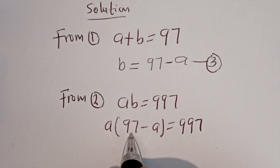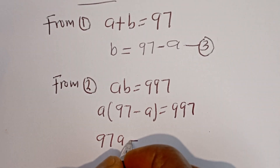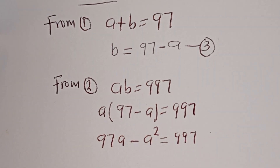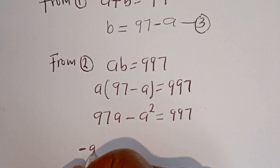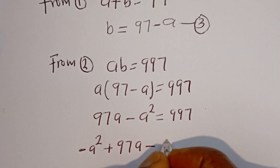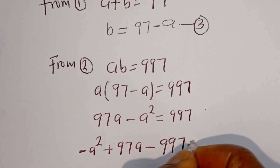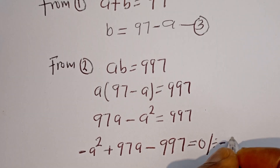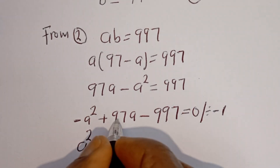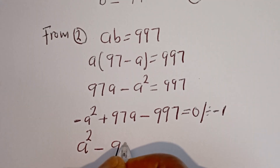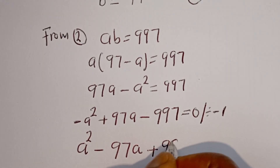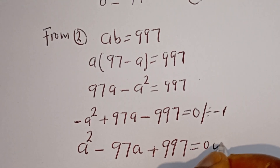Let's open these brackets: a multiplied by 97 gives 97a, minus a multiplied by a gives a squared, is equal to 997. So we have minus a squared plus 97a. Taking 997 to the other side gives minus 997 equals 0. Dividing everything by minus 1, this is a quadratic equation.